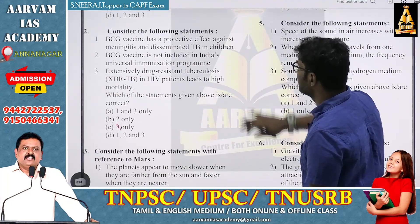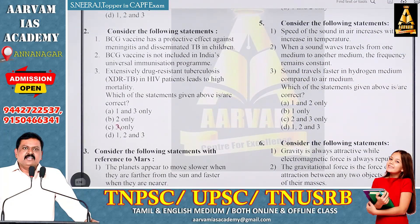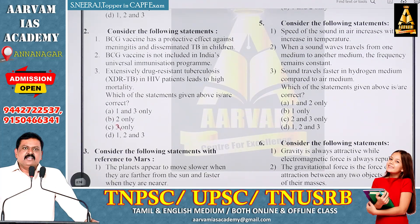BCG vaccine has a protective effect against meningitis and disseminated TB in children. BCG vaccine is not included in India's universal immunization program. In HIV patients, it leads to high mortality. So, the understatement is correct.